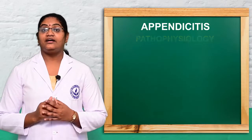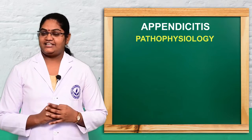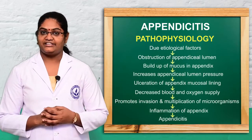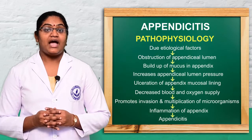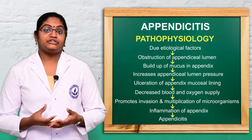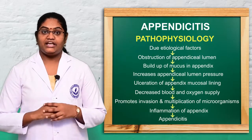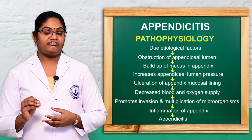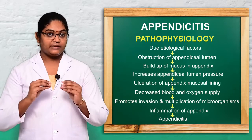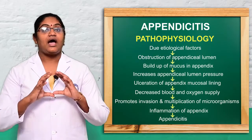Now let's see the pathophysiology of appendicitis. Due to the etiological factors already discussed, there is obstruction of the appendiceal lumen. This leads to increased production of mucus inside the appendix, which increases the pressure of the appendiceal lumen. The lumen becomes stretched and the increased pressure leads to ulceration of the appendiceal lumen.